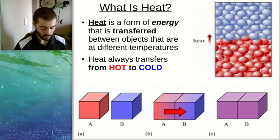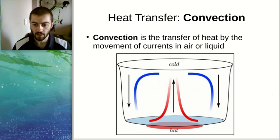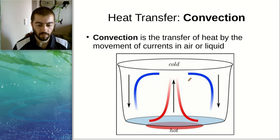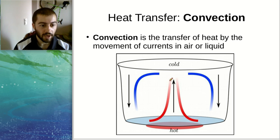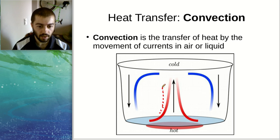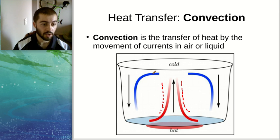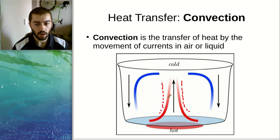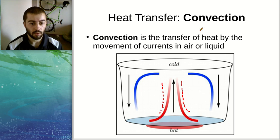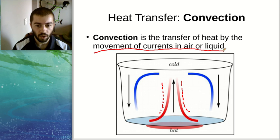The first mode of heat transfer is convection. Convection occurs when there's movement of air or liquid. In a pot of boiling water, the hot bubbles and heated water rise upward, and the cooler water near the top falls downward to replace it, then gets heated and rises again. This creates a convection current — the movement of liquid or gas that causes heat to transfer. The key with convection is that it requires movement of air or liquid.